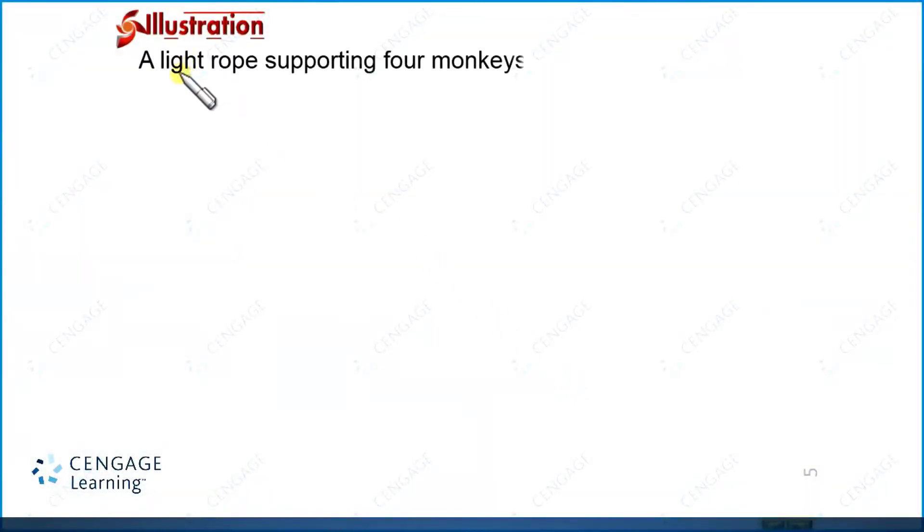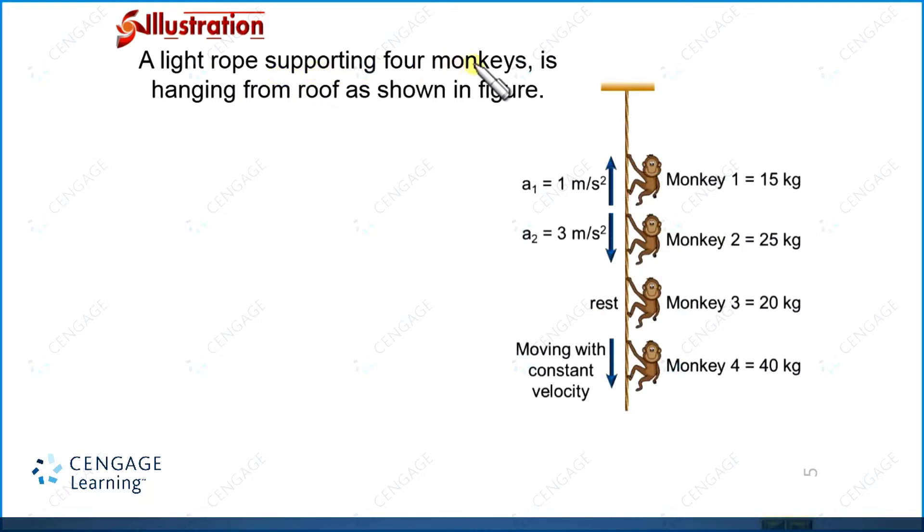In this illustration, it is given a light rope supporting four monkeys. You can follow the diagram. These are the four monkeys. Monkey 1 is 15 kg, monkey 2 is 25 kg,